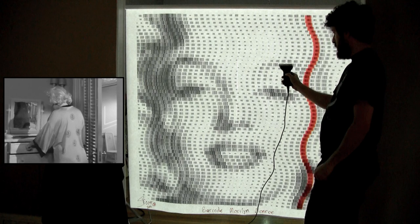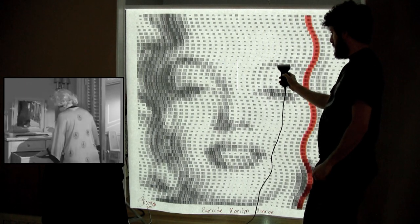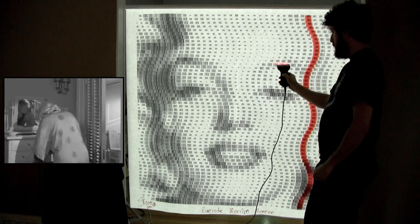There is a video projector behind the print, so when a barcode is scanned, the projector highlights a precise column of barcodes.